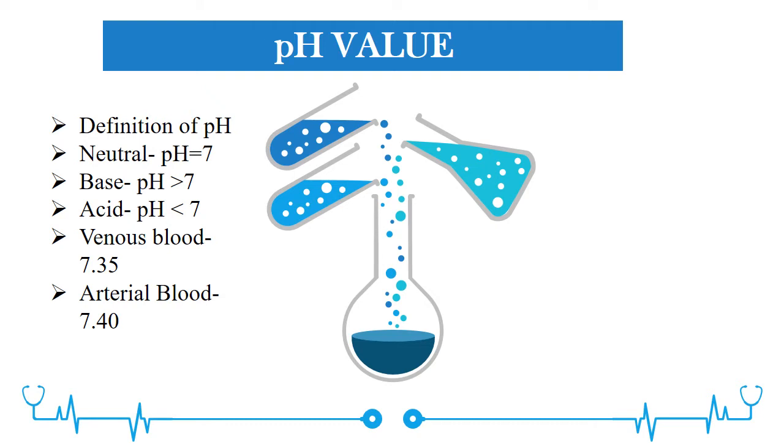The chemical balance of the body is identified by measuring the pH of blood and other body fluids. pH is defined as the logarithm of the reciprocal of the H+ ion concentration.